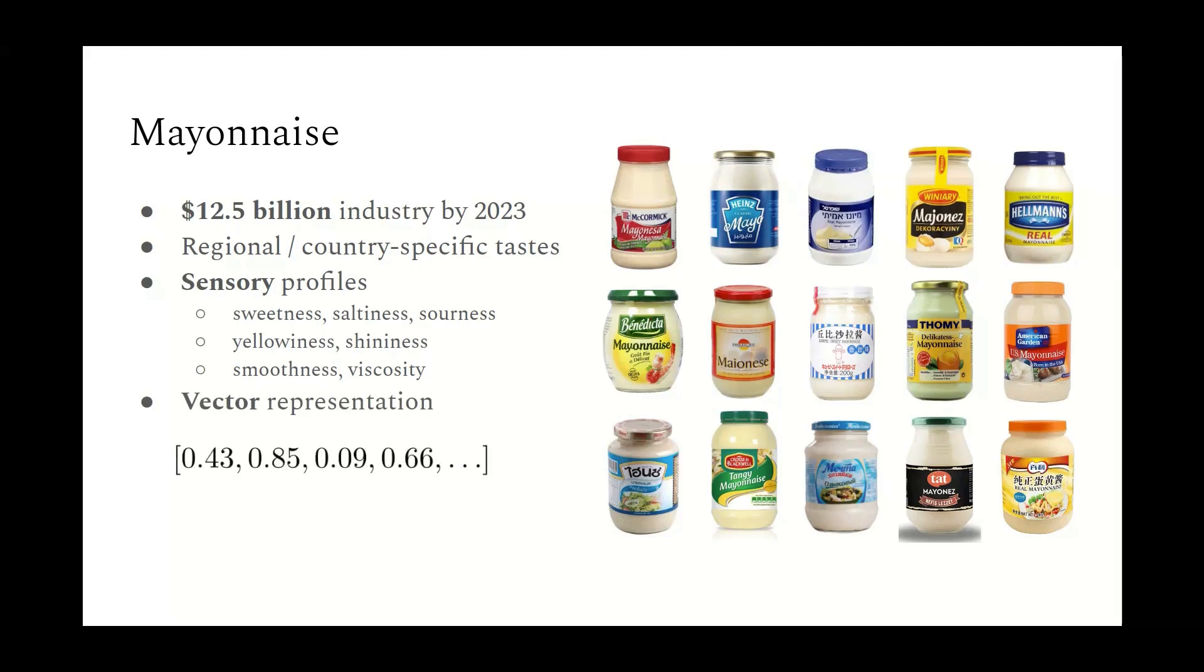What the sensory profiles allow you to do is that they allow you to turn each product into a vector. So by scoring each mayonnaise product on these different attributes, you can generate a vector representation. And then once you have your vector representation, a common technique is to then try to figure out how much people like particular attribute combinations. And so what you do is that you first conduct consumer surveys.